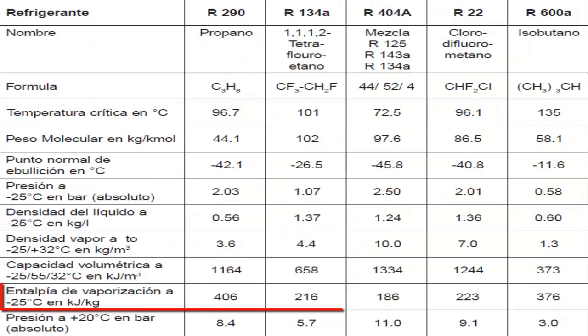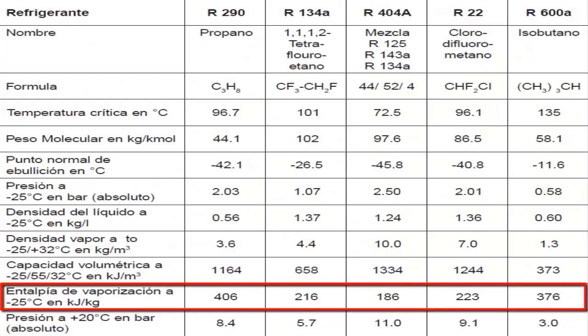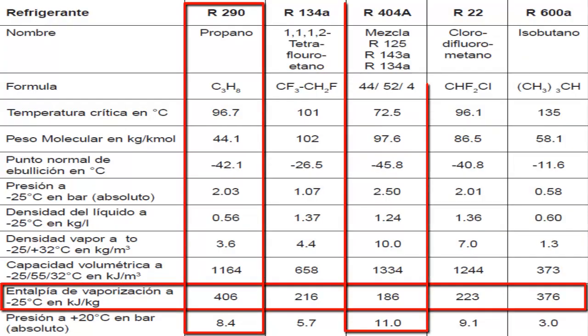A compressor using R290 handles fewer grams of gas compared to the R404A compressor, but each gram of R290 has a greater cooling capacity than a gram of R404A.